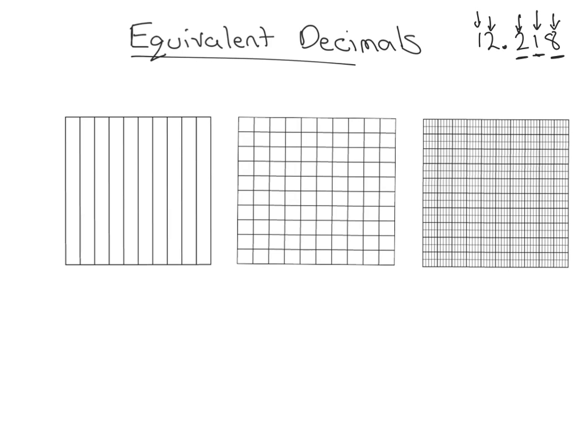So what we want to do today is write equivalent decimals. Equivalent just means decimals that have the same value, the same amount. They're going to be different numbers but they will have the same amount. Let's start with a decimal. I'm going to start using my tenths grid. Tenths means the whole square is divided up into ten parts. I'm going to color in two of these lines here. I'm going to try my best to color in two.